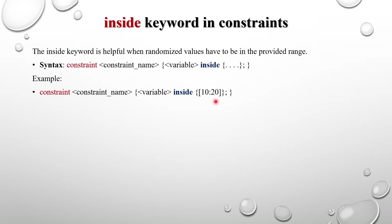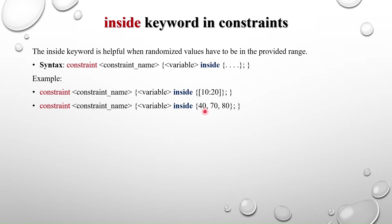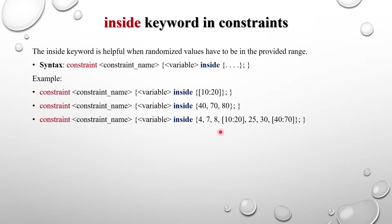The first type uses square brackets: [10 : 20], which generates values from 10 to 20 inclusive. The second type is a non-continuous set — for example {40, 70, 80} — so the generated value will be only 40, 70, or 80. We can also combine both a range and a set of discrete values in a single constraint.